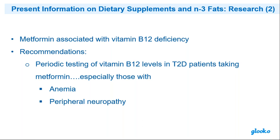Metformin, one of our long-term diabetes medications, is associated with vitamin B12 deficiency. The recommendation is to periodically test blood levels of B12 and, if they're running low — which is a deficiency — supplement with B12 to prevent anemia and peripheral neuropathy. Getting blood tests for deficiencies is important.